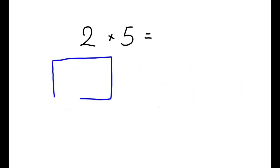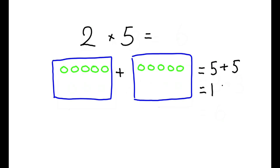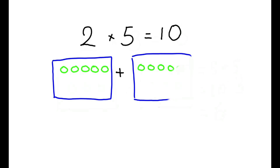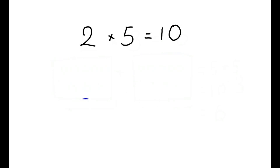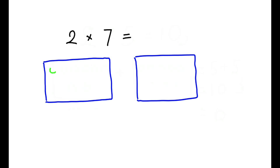2 times 5 means there are 2 boxes, and each box has 5 circles, and the answer is the total number of circles, which is 5 plus 5. 2 times 7 means there are 2 boxes, and each box has 7 circles, and the answer is the total number of circles, which is 7 plus 7. The answer is 14.